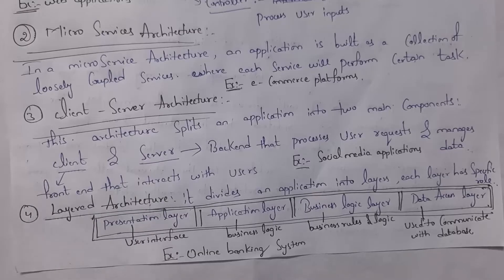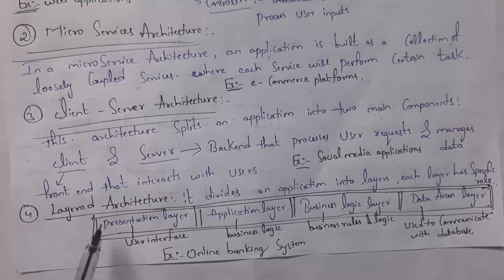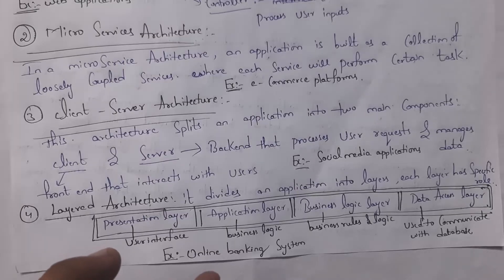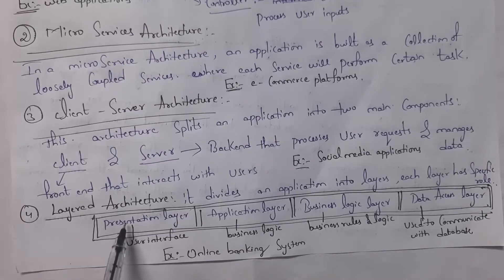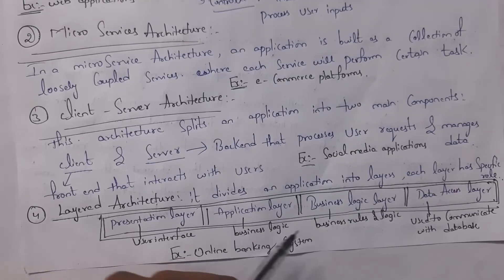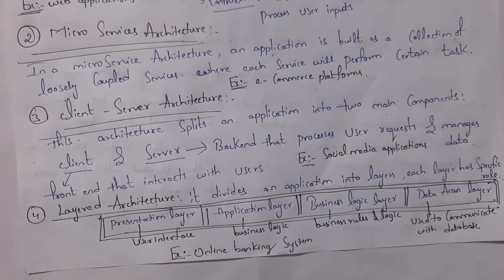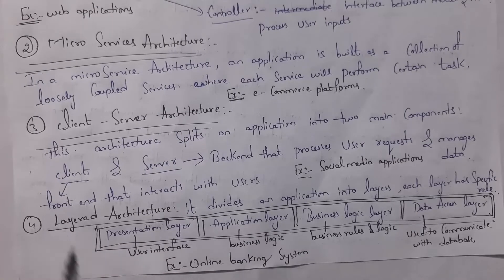The last one is Layered Architecture. Separation of concerns is implemented in Layered Architecture because it divides the application into various layers like Presentation Layer, Application Layer, Business Logic Layer, and Data Access Layer. Each layer has separate roles: Presentation Layer handles user interface, Application Layer handles business logic, Business Logic Layer handles business rules and logic, and Data Access Layer handles the database. Online Banking System is an example of Layered Architecture. These are four real-world examples where separation of concerns is implemented.